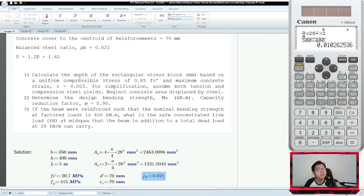Question number one: calculate the depth of the rectangular stress block. For simplification, assume both tension and compression steel yields. So this is good about the board exam - the examiner knows the solution is quite long, so usually they give us shortcuts. We can actually skip some of the steps because of the assumptions.